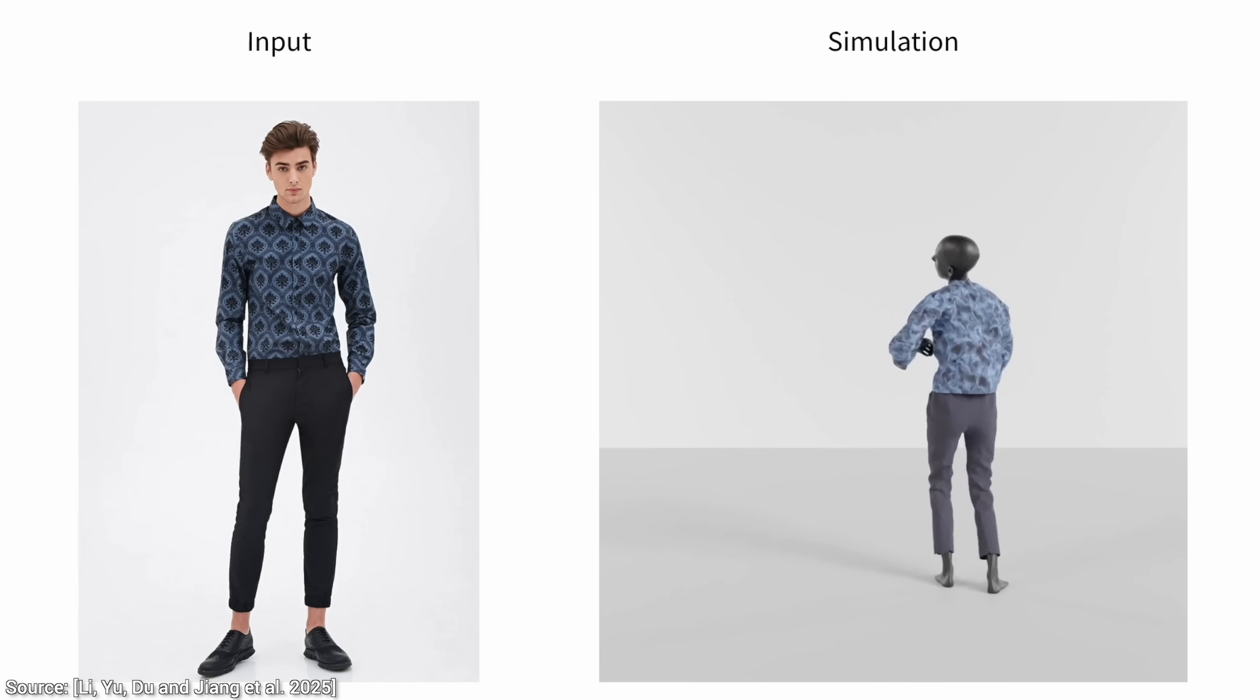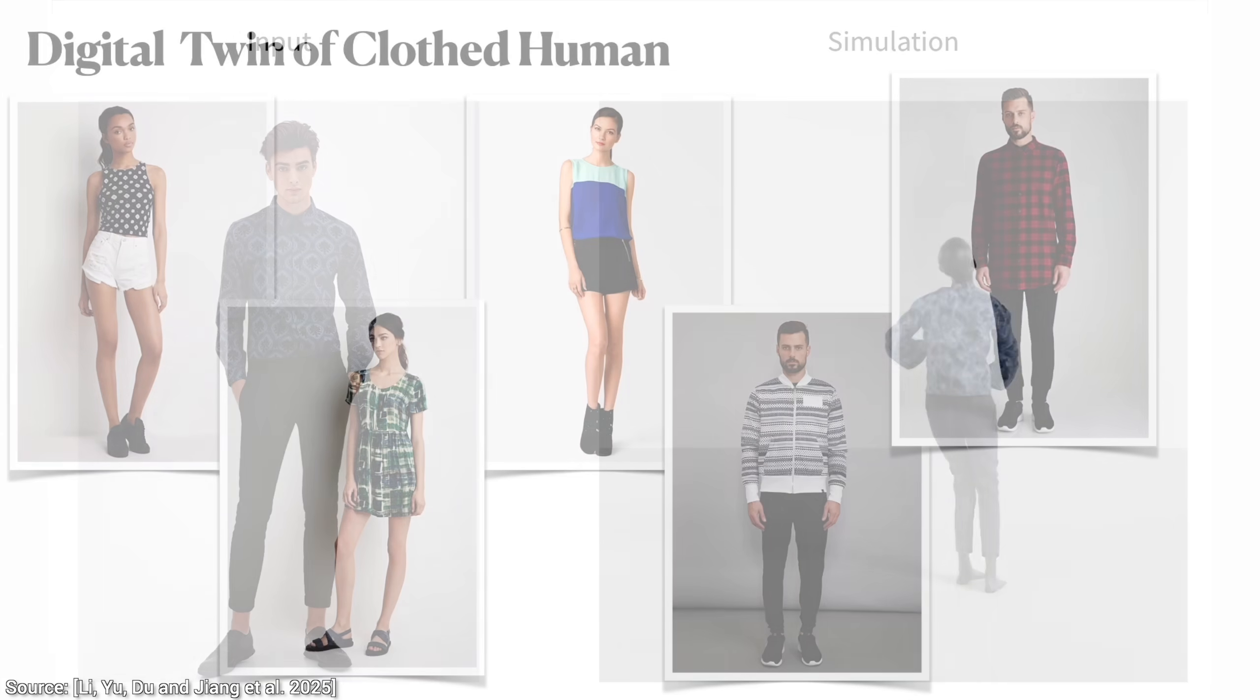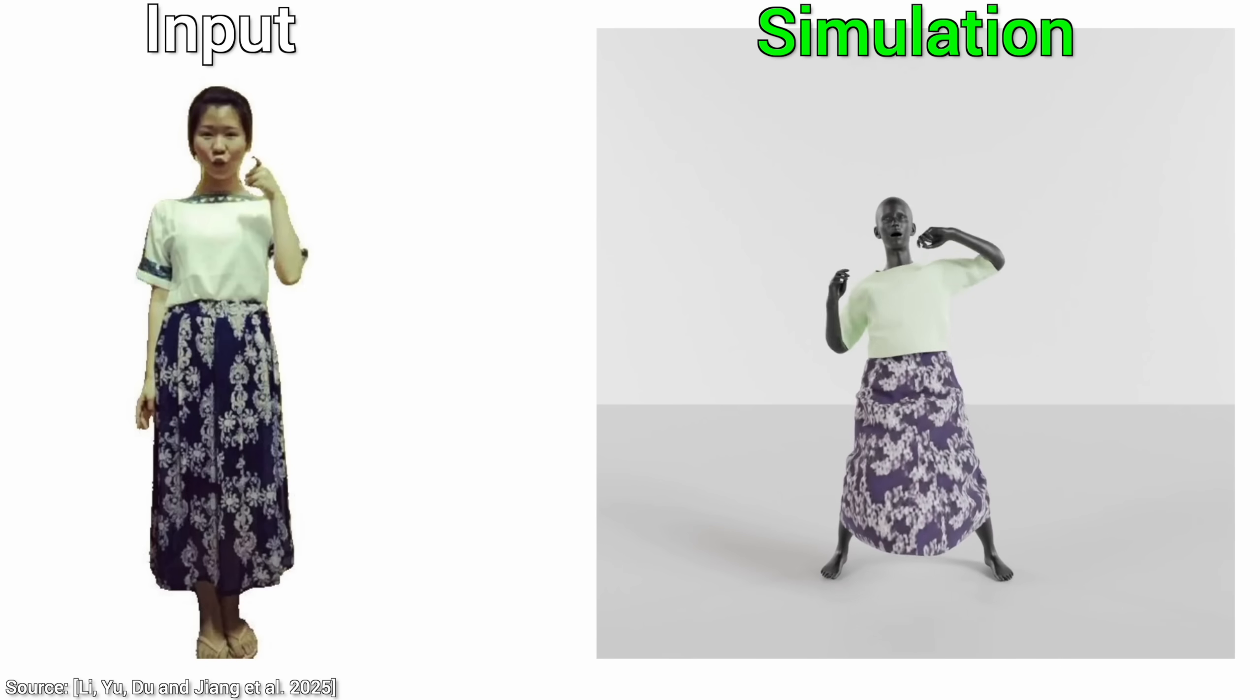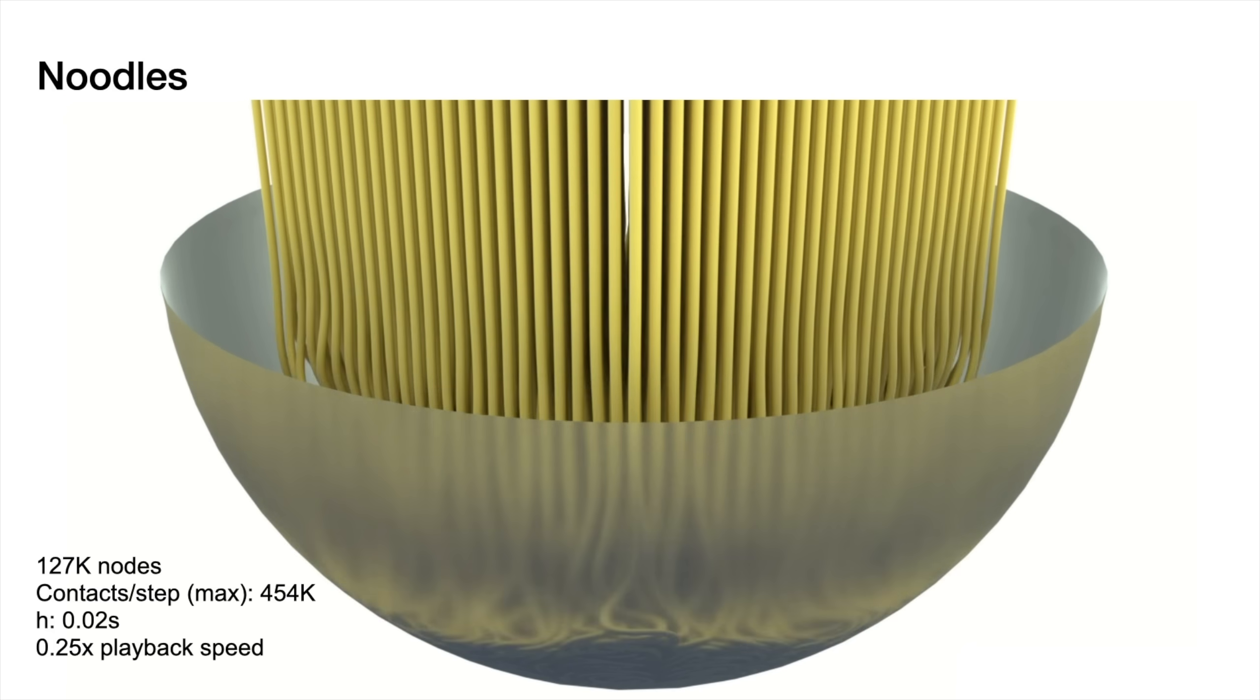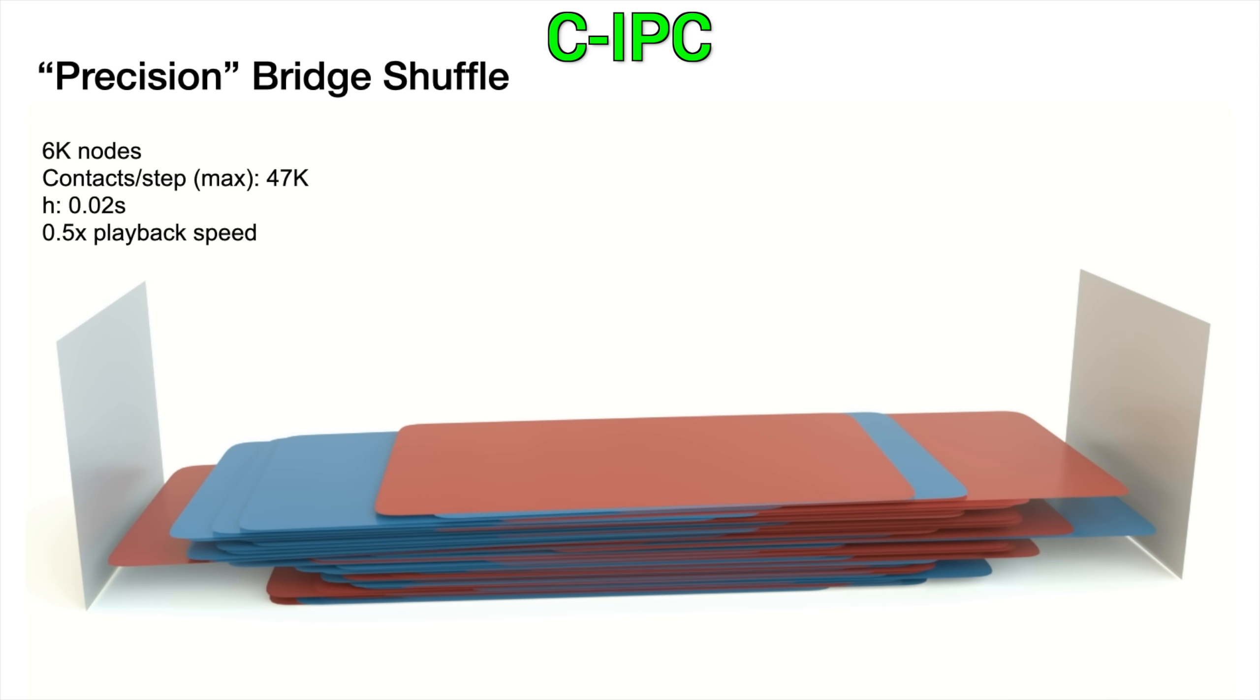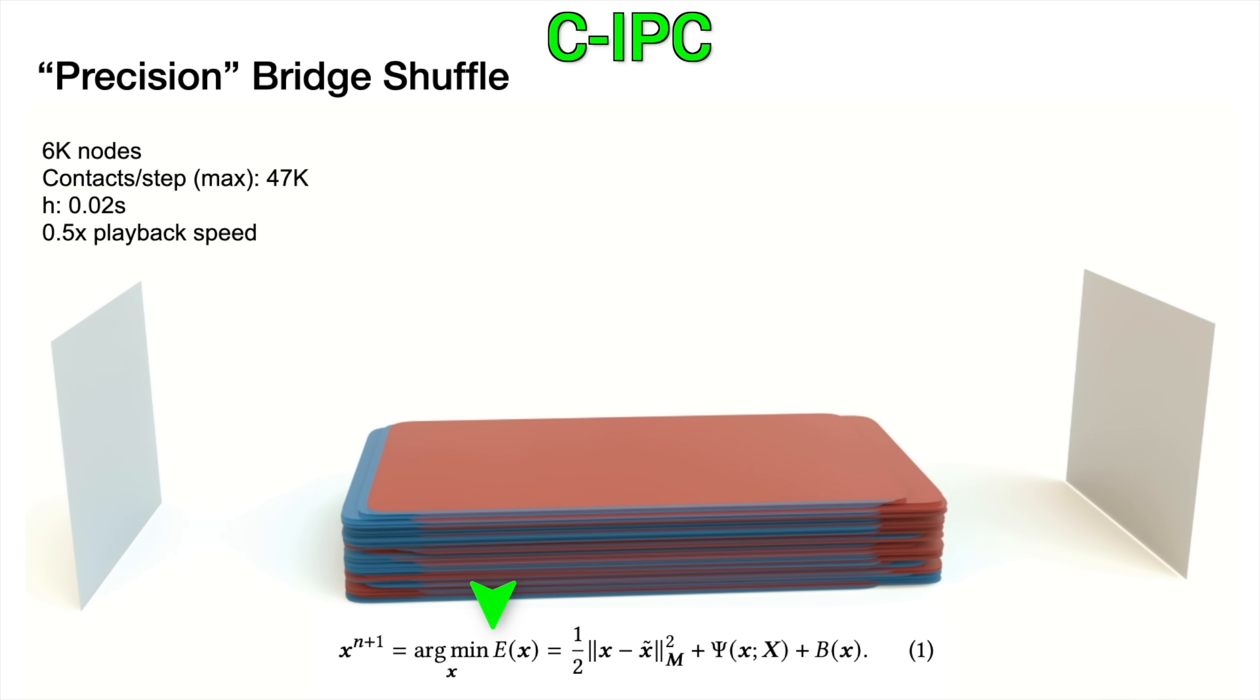Instead, you can think of it like a team of tiny artists walking in circles around the mannequin, each one sketching what they think they see, and then arguing until they all agree on a consistent shape. And now comes the human ingenuity part. Here is the secret weapon. Codimensional incremental potential contact. If you want to sound really cool, just call it CIPC, and disregard the blank stare of that poor cashier in Costco. Bonus points if you explain this energy term to them while buying socks.